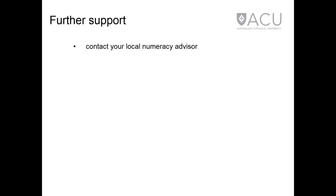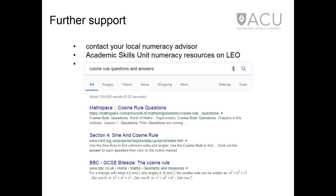For further support, contact your local Academic Skills Numeracy advisor on your campus. You can access the Academic Skills Numeracy resources on LEO. You can also search the internet for exercises with solutions on the cosine rule. In this particular example, there are 199,000 results, so there is no shortage of material to practice with.